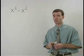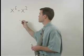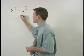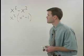In this case, we have a greatest common factor of x squared, so that needs to be factored out first. That leaves us with x to the fourth minus one inside the parentheses.